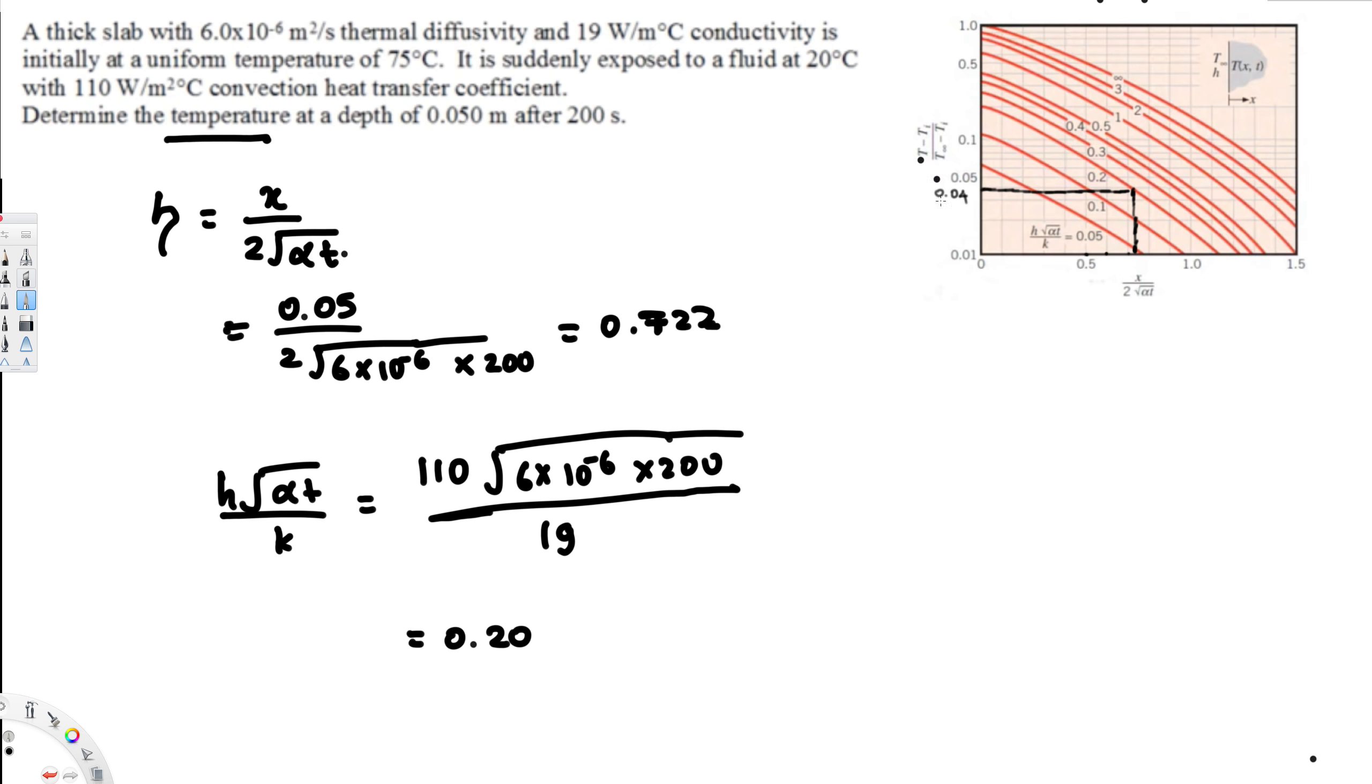So here we have t minus t_i over t_infinity minus t_i is equivalent to 0.04. Now here we have initial temperature and ambient temperature. So this is ambient temperature and initial temperature is right here.